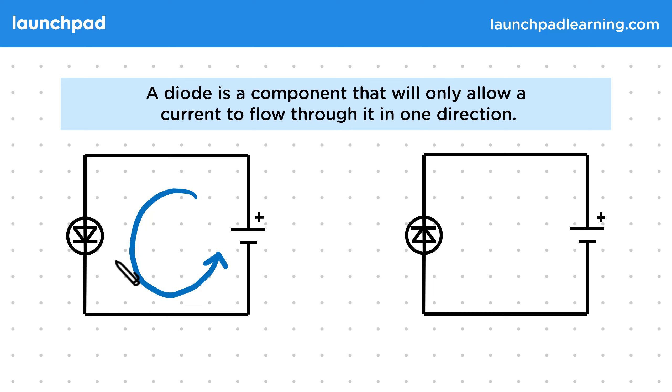So the diode doesn't affect the current and it can flow normally. Then on the right, we also have a current that is directed anti-clockwise around the circuit.